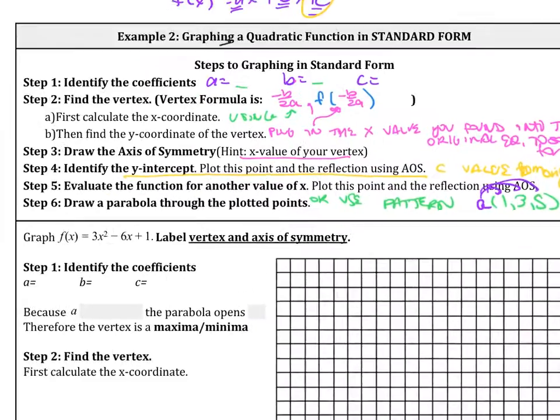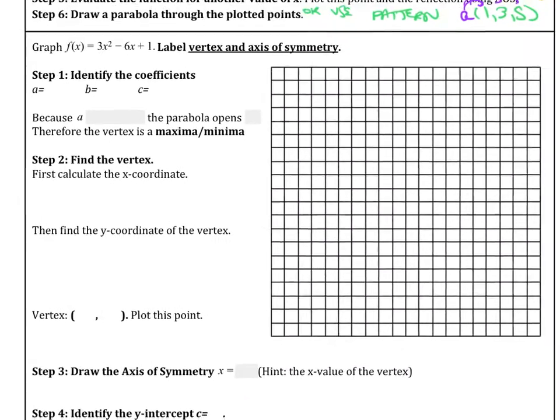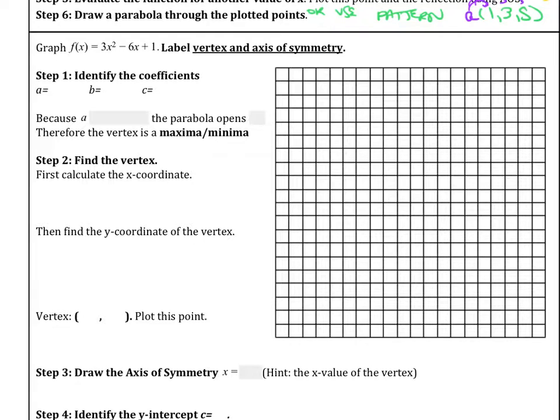So let's try this example. We have 3x squared minus 6x plus 1. So let's identify a, b, and c first. So a is 3, b is negative 6, and c is positive 1. So the signs are very important. Now just to talk a little bit more about the parabola, you know that the a value, this 3, is positive, so therefore the parabola opens up, and we know that our vertex will be the lowest point, the minimum.